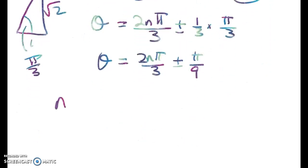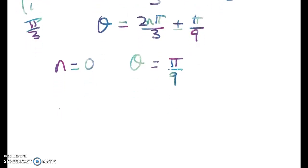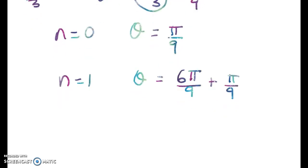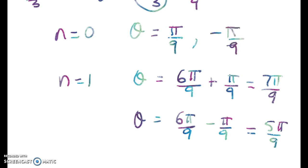So now let's chuck in some values. When n equals 0, theta is equal to pi on 9. And when n is 1, what do we get? When n is 1, theta is equal to 6 pi on 9. So that's 2 pi on 3, 6 pi on 9 plus pi on 9, or theta is equal to 6 pi on 9 minus pi on 9. So that gives me 7 pi on 9, and that one gives me 5 pi on 9. Now I could also have done negative pi on 9 here, but you'll see that it's going to be superfluous.